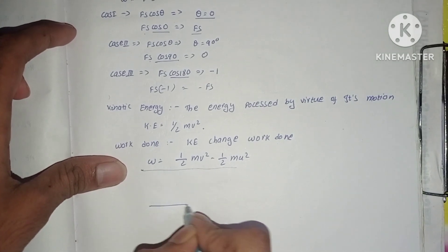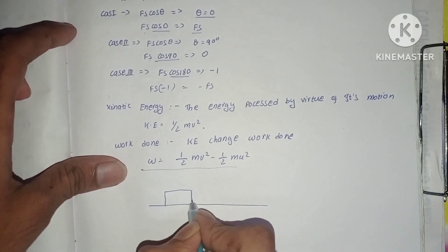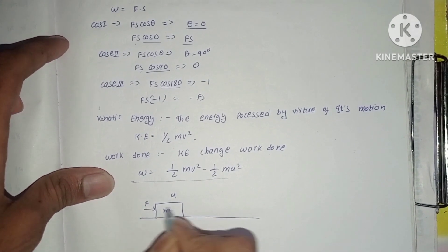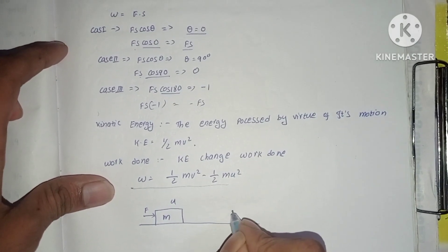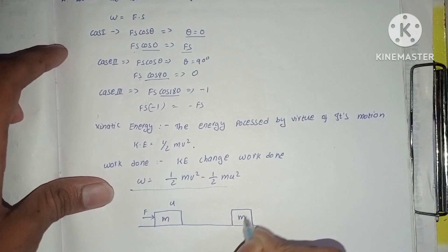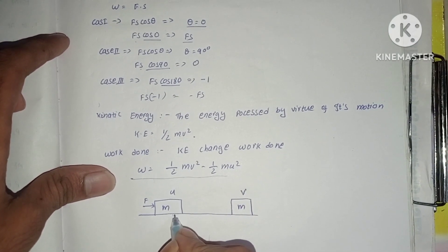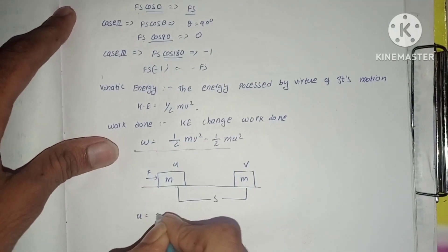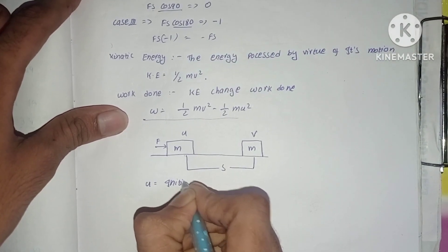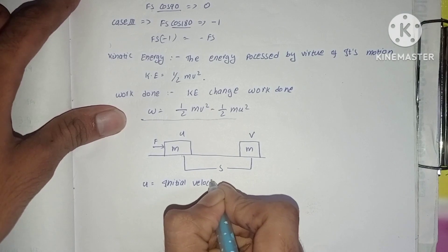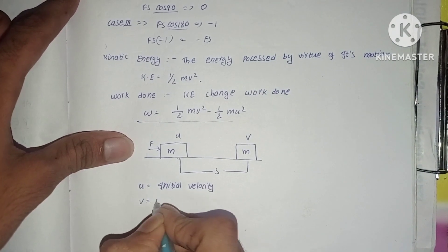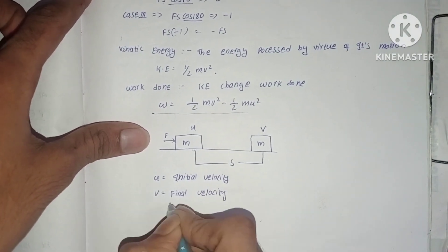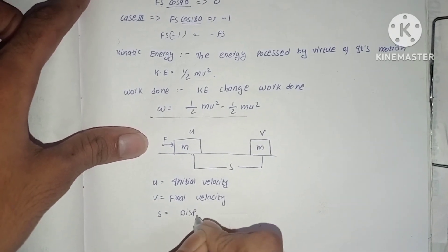Let us take a diagram. We have a mass m with initial velocity u, and some force is applied on it. After some time t, the mass reaches final velocity v, and s is the displacement traveled by the body.